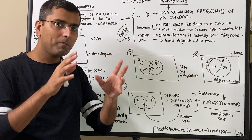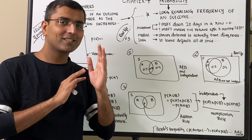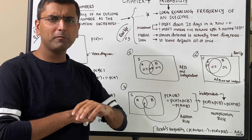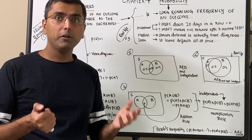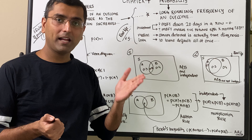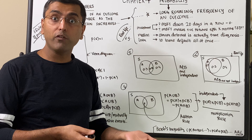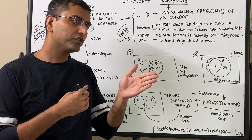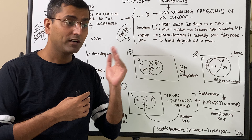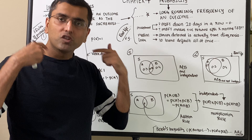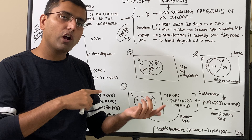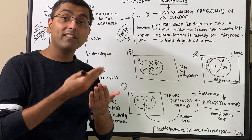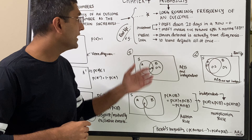Probability is about knowing the odds against or in favor of certain events happening. It's applicable everywhere — a banker giving a loan wants to know the probability that the borrower will default. If you take a medical exam and are diagnosed with cancer, what's the probability that the diagnosis is correct? All of that is about looking at long-running history and what the data shows.